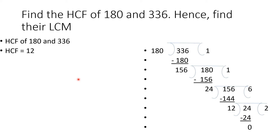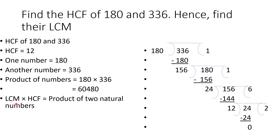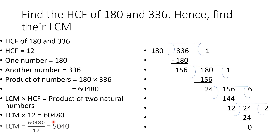Now find the LCM. One number = 180, other = 336. Using LCM × HCF = product of numbers: product = 180 × 336 = 60,480. So LCM = 60,480 ÷ 12 = 5040. That is the LCM.